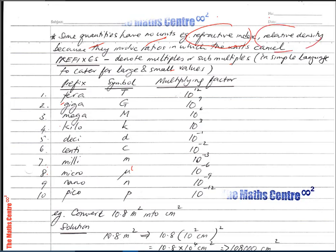Some quantities have no units. Examples include refractive index and relative density, because they involve ratios in their definitions in which the units cancel. For example, refractive index is defined as c/v, where c is the speed of light in vacuum and v is the speed of light in the medium — both in meters per second, so the units cancel and refractive index has no units.